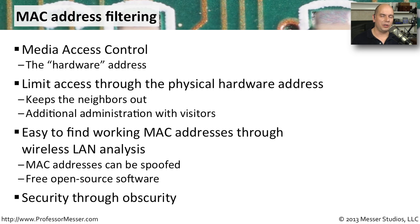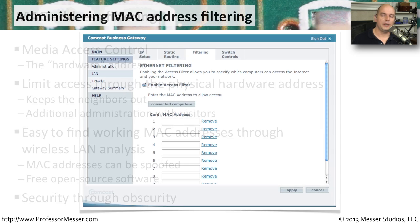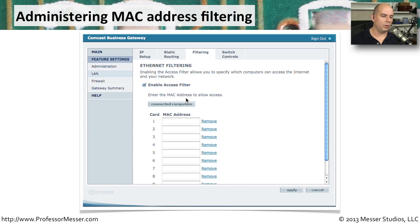We call this security through obscurity. It's not completely obvious how you get around it, but it's also not really a security feature. Here's an example of a wireless access point where you can define the MAC addresses that are allowed access — simply add them to the list, and you limit which MAC addresses can communicate through your network.